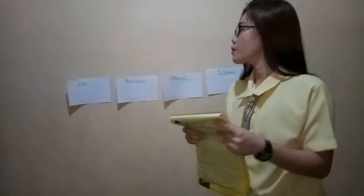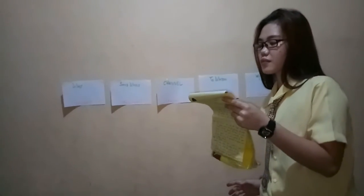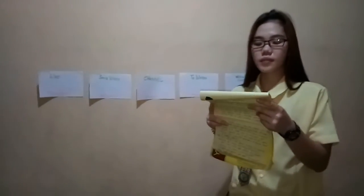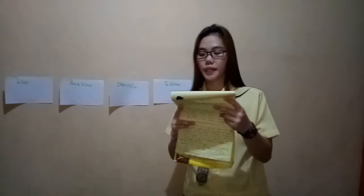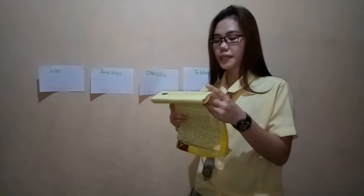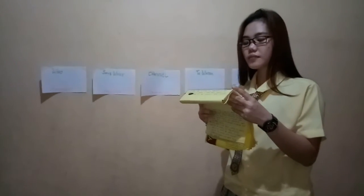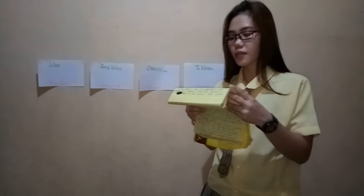The second model of communication is Lasswell's model of communication. This model was developed by communication theorist Harold D. Lasswell in 1948. It is also known as the action model, linear model, or one-way model of communication, and is regarded as one of the most influential communication models. Lasswell states that a convenient way to describe an act of communication is to answer the following questions: Who?